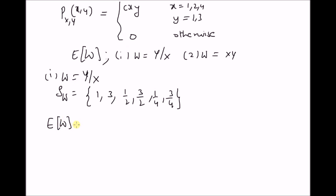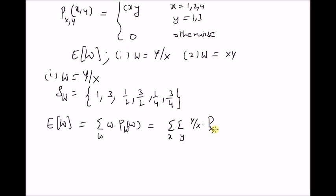The expected value E[W] is given by definition as the summation over all values of W of the product w times the probability mass function of W. This is also equal to the summation of the joint PMF P(x, y) multiplied by the function y/x, over all values of x and y. The key idea is that E[W] equals the expectation of the function y/x over the original joint PMF.